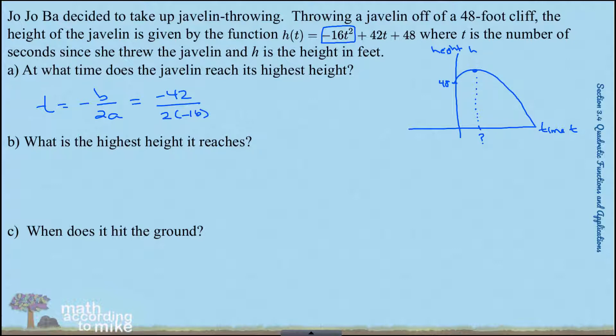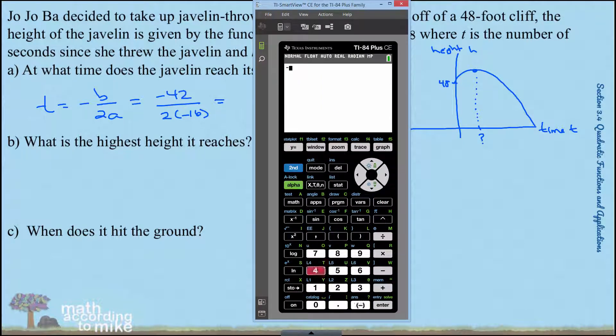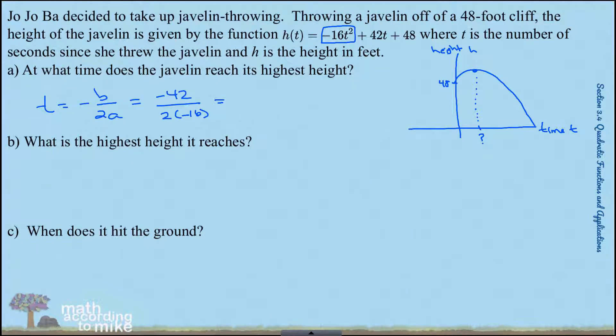Putting that into the calculator, let me bring the calculator over again. Negative 42 divided by technically negative 32. 1.3125. One point three one two five seconds. Oh wait, why was I writing unit? I want to write seconds here. No one will know. Also that three is very far, I'll just make the decimal point much bigger. All right, works for me.